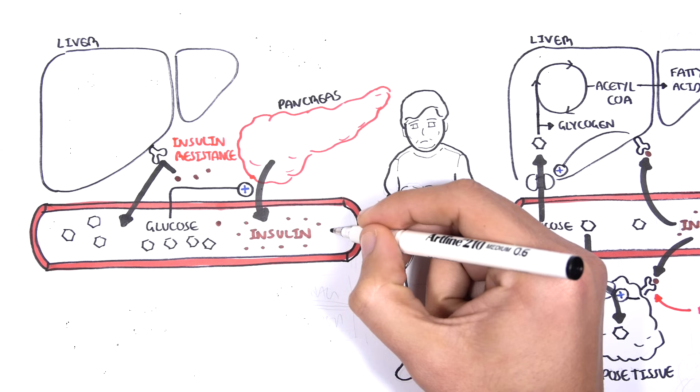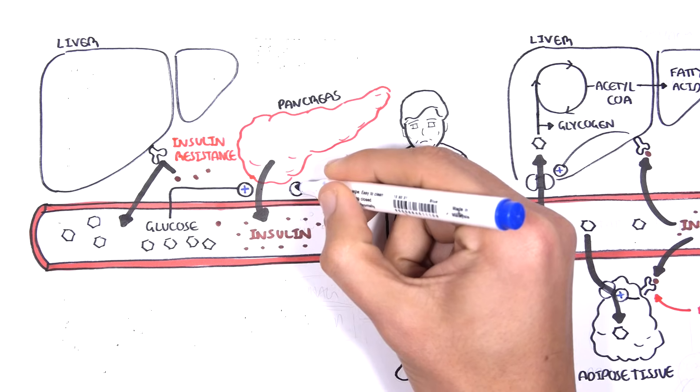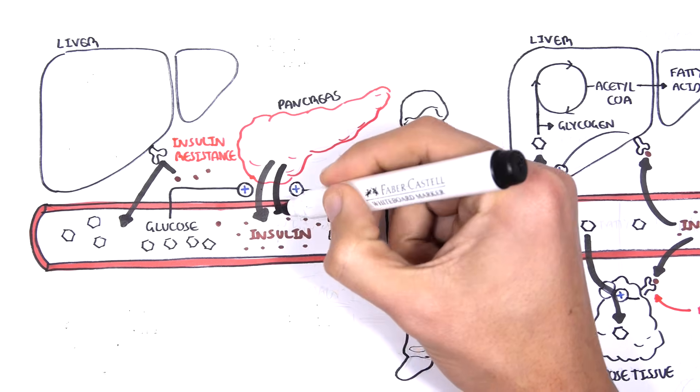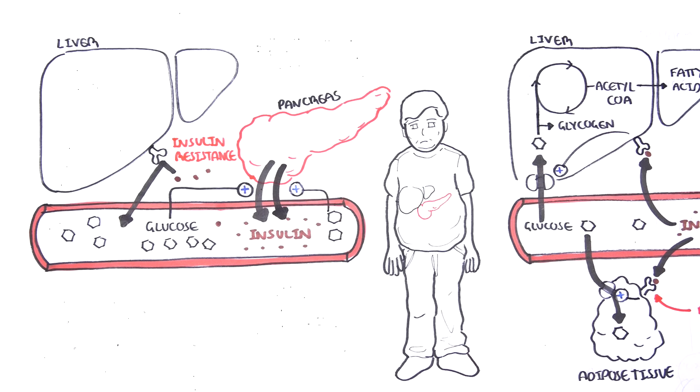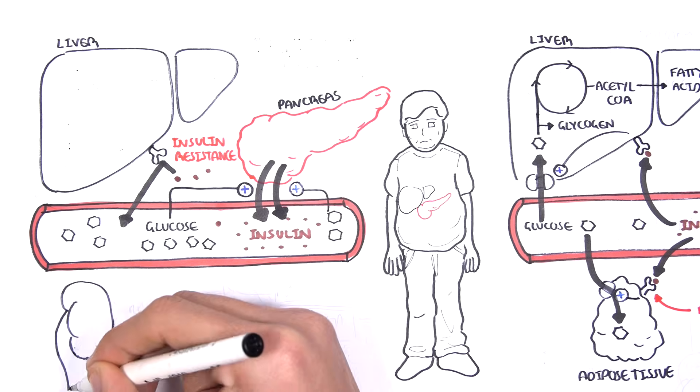So because of insulin resistance, glucose cannot be taken up by all these different organs. And so you have high blood glucose. Because there is high blood glucose, the pancreas is told to secrete more insulin, despite not changing the fact that insulin resistance is present.